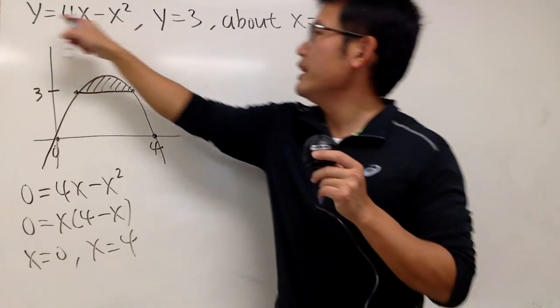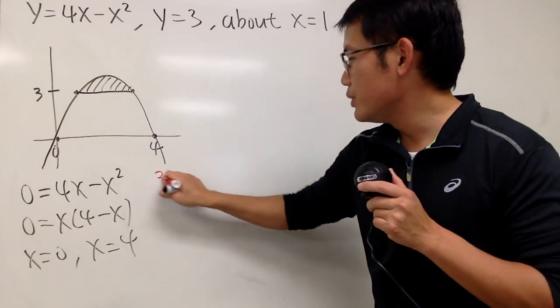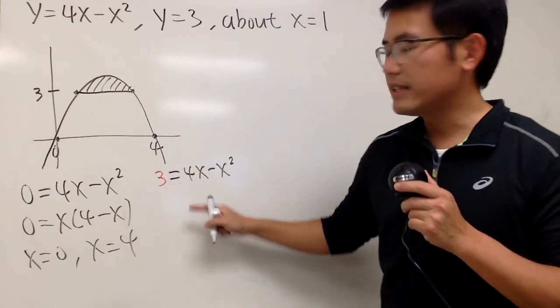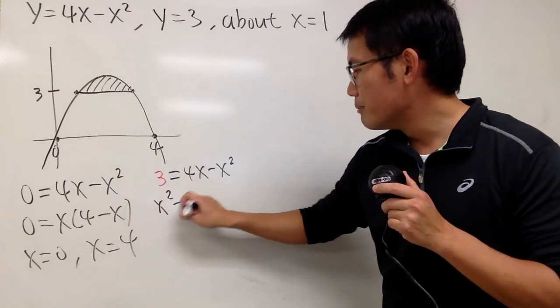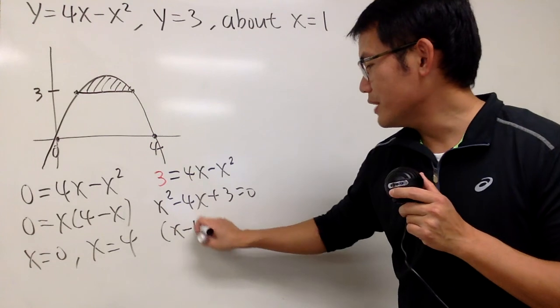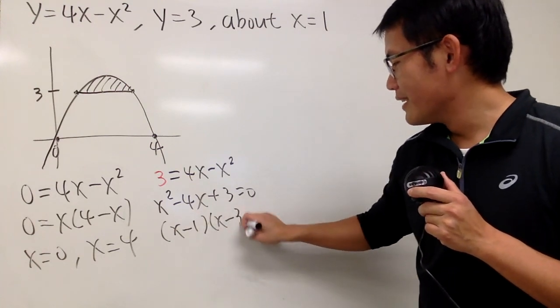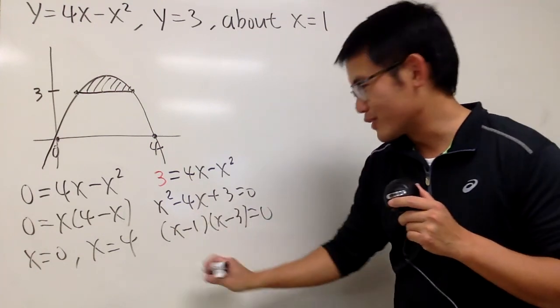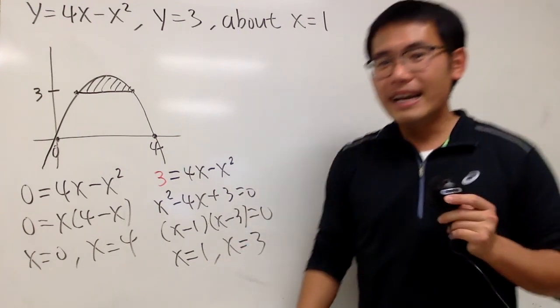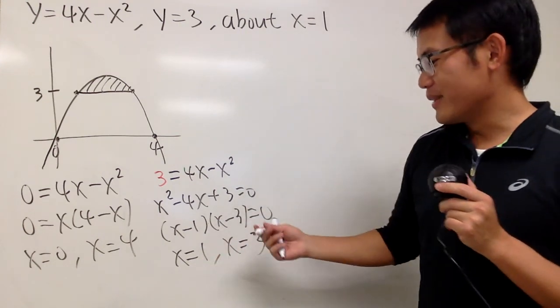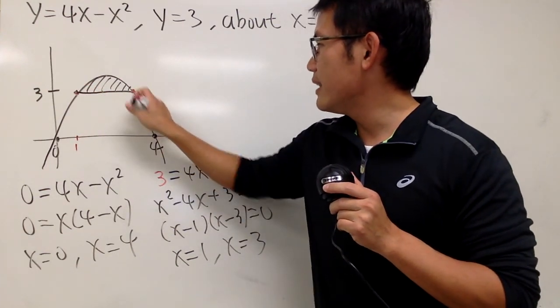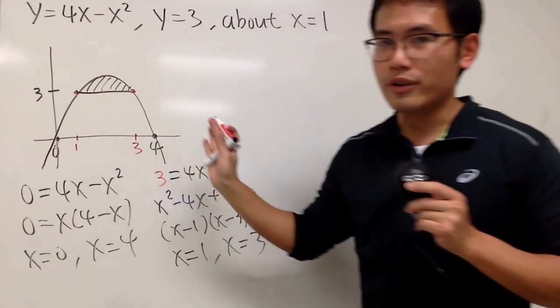To do that, you put 3 into the y, so we get 3 equals 4x minus x squared. Move this and that to the other side. We get x squared minus 4x plus 3 equals 0. Man, don't you guys miss the good old days? This is all you have to do for the whole question and you can be getting an A already. Anyway, x equals 1, x equals 3. So that will be our x-coordinates, and these are very important, right?